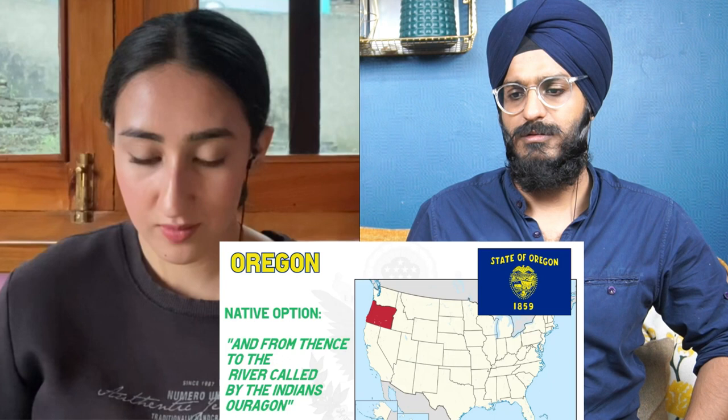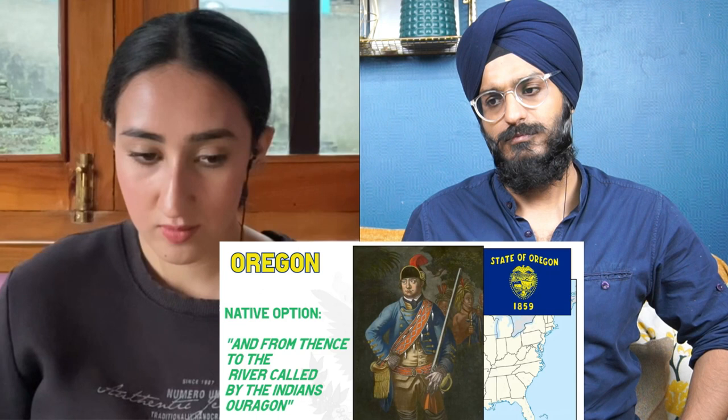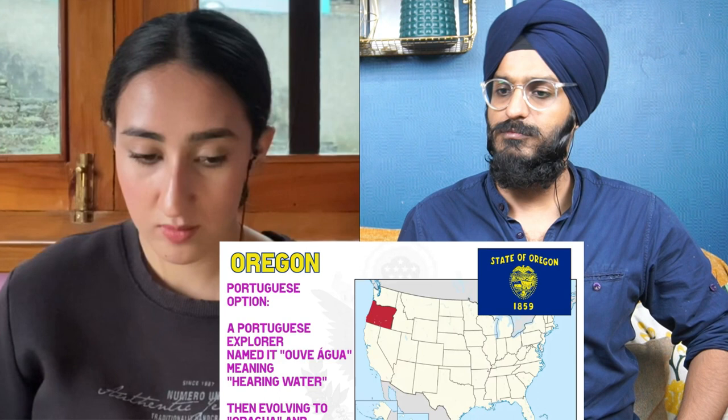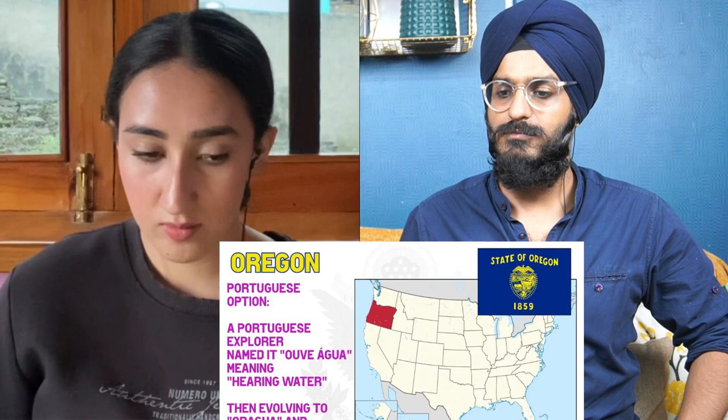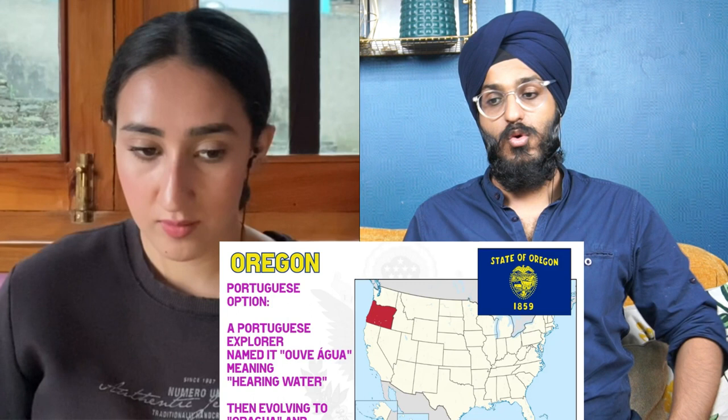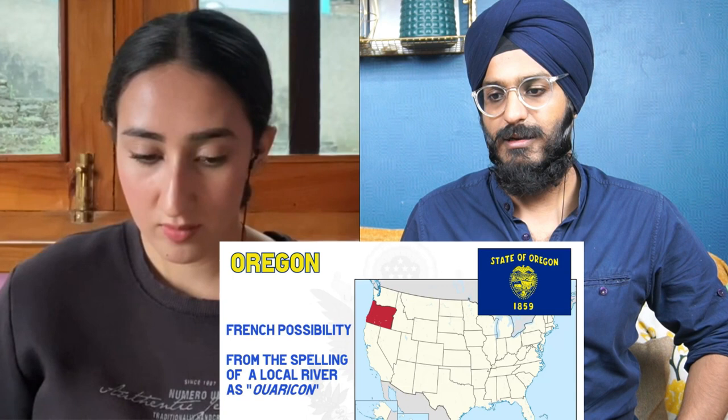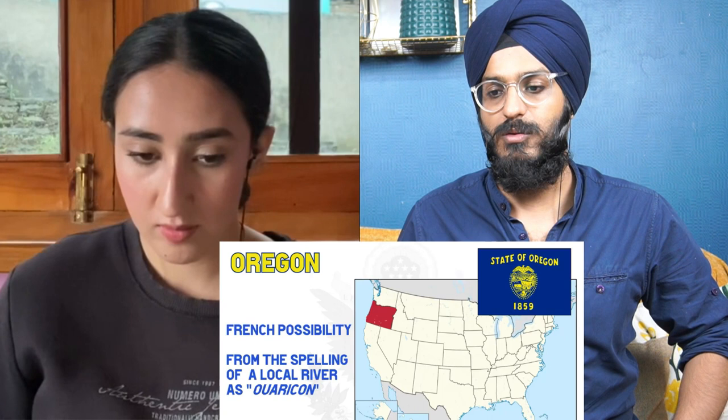For Oregon there are four options: Spanish origin after the word 'oregano' referring to a plant, after a stream in Spain, or after the term 'orejon' meaning 'big ear.' A native origin is evident in a 1765 petition where Robert Rogers wrote of 'the river called by the Indians Oregon.' A 1904 proposal suggested a Portuguese explorer named it from 'oágua' meaning 'hearing water,' and a French possibility has it from the spelling of a local river as 'Ourigan.'